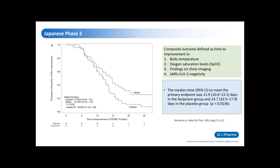The results were based on a composite outcome defined as the time to improvement in body temperature, oxygen saturation levels, findings on chest imaging, and SARS-CoV-2 negativity. Patients enrolled in this study had to be diagnosed with mild COVID-19 pneumonia, meaning they already had signs of inflammatory responses in their lungs. The median time to meet the primary composite endpoint was 11.9 days in the favipiravir group versus 14.7 days in the placebo group.